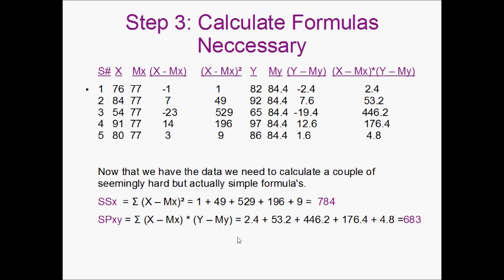The next thing we need to calculate is our covariation. This is abbreviated by SPxy. The formula for this is going to be the sum of X minus mean of X times Y minus mean of Y. So we're going to take these numbers over here and we're going to add them all up. So 2.4 plus 53.2 plus 446.2 plus 176.4 plus 4.8 is 683.